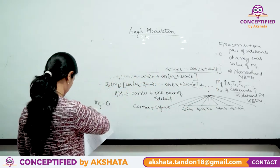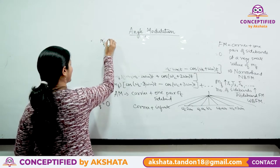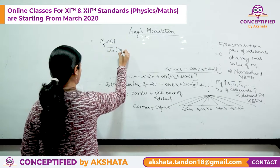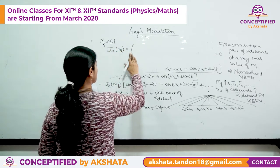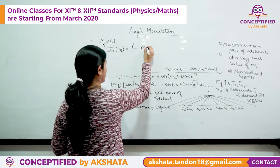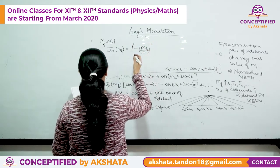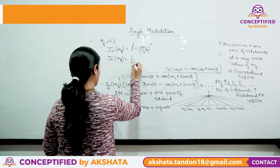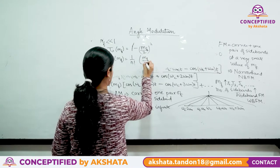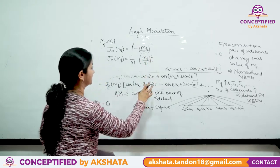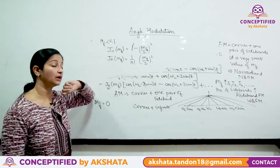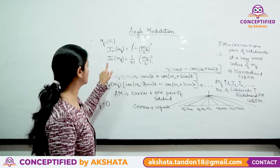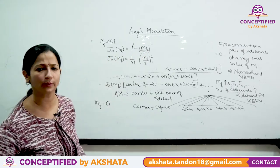One more important property: if mf << 1, then J₀(mf) ≈ 1 − (mf/2)², and Jₙ(mf) ≈ (1/n!) × (mf/2)ⁿ. This is important for numericals.